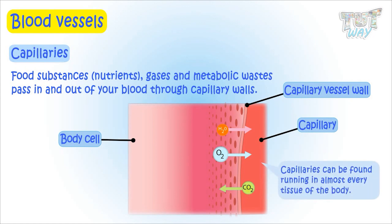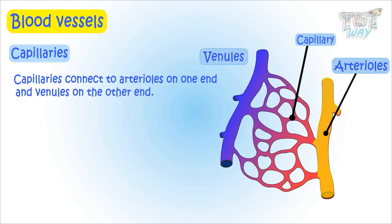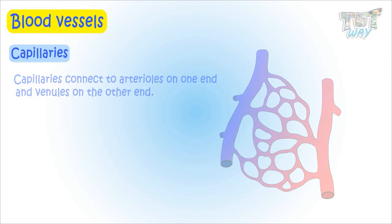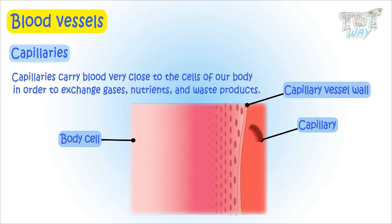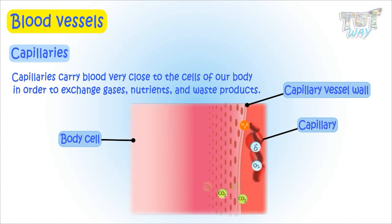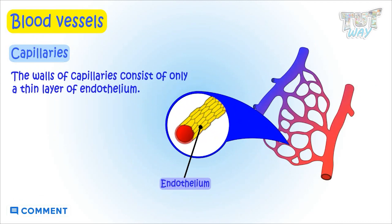Capillaries can be found running through almost every tissue of the body. They connect to arterioles on one end and venules on the other end. These capillaries carry blood very close to the cells of the tissues of the body in order to exchange gases, nutrients, and waste products.